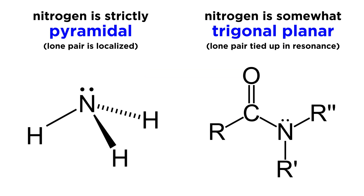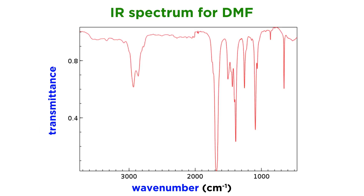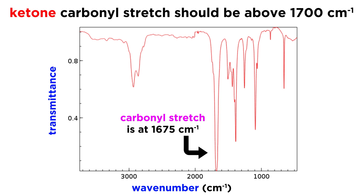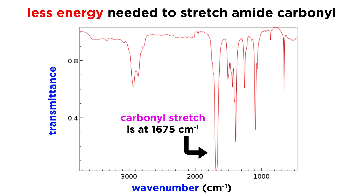This is in stark contrast with amines, which are pyramidal, as the lone pair occupies one of the vertices of a tetrahedron, which the lone pair on the nitrogen in the amide does not do because of resonance. In addition, if we look at IR spectroscopy data, the carbonyl stretch for DMF shows up at a wavenumber of around 1675, as opposed to a ketone, which shows up at 1700 or above. This means it takes less energy to stretch the carbonyl in an amide than in a ketone, which is indicative of the fact that the carbonyl in the ketone is localized, whereas in the amide it is delocalized.